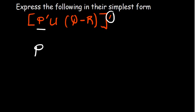From De Morgan's laws, we can see that the sign changes whenever you distribute a complement, so it's going to be intersection there. Then in the brackets we have Q minus R, and Q minus R is the same as Q intersection R complement.